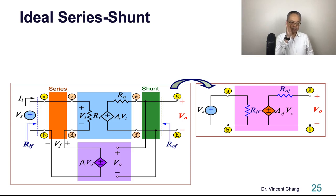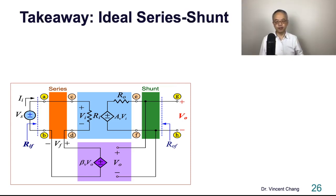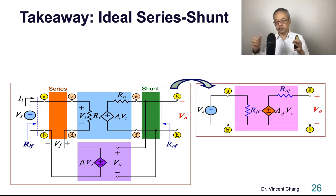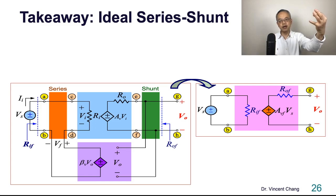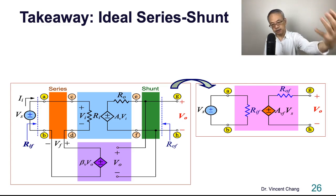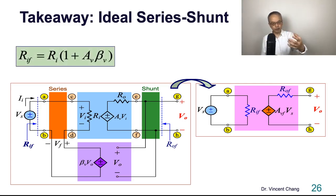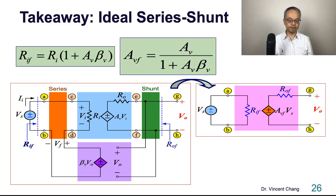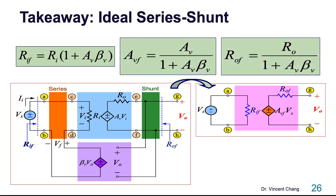So in this lecture we focused on the ideal series-shunt feedback. The takeaway: we can consolidate the series-shunt feedback structure into a simple equivalent circuit highlighting three important parameters. Number one, the closed-loop input resistance RIF — increased due to series mixing. Number two, the closed-loop voltage gain AVF — unchanged because it's the ideal structure. Number three, the closed-loop output resistance — reduced because of shunt sampling. This is the ideal series-shunt feedback.